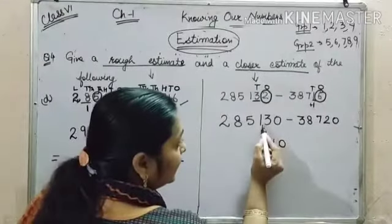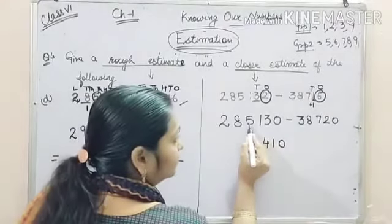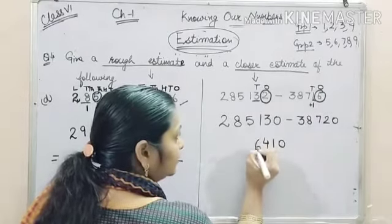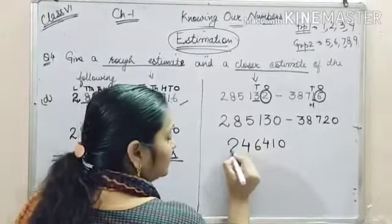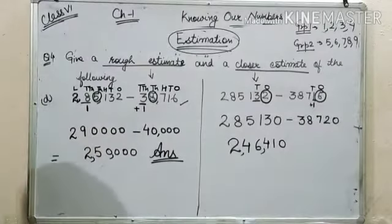Subtracting both the numbers, we will get 2,46,410.